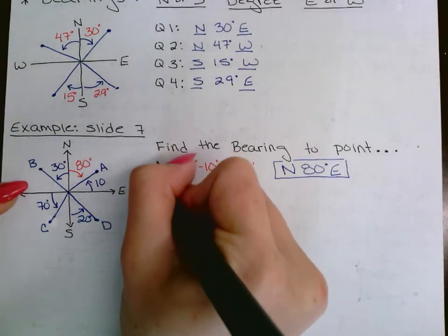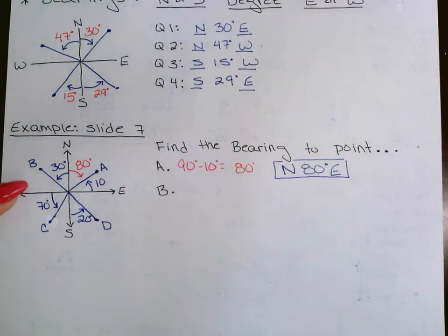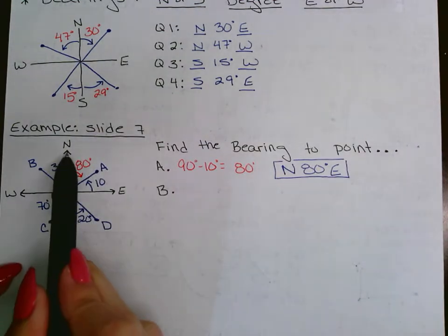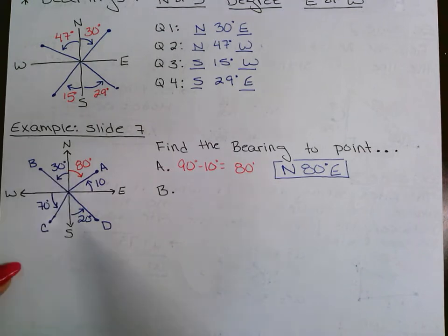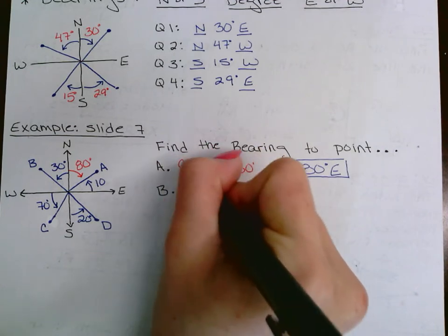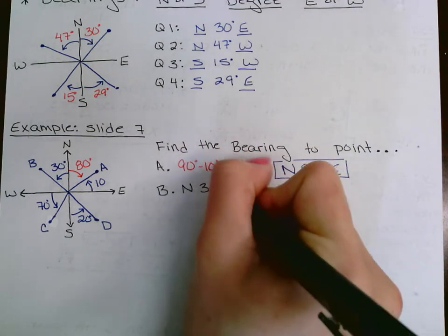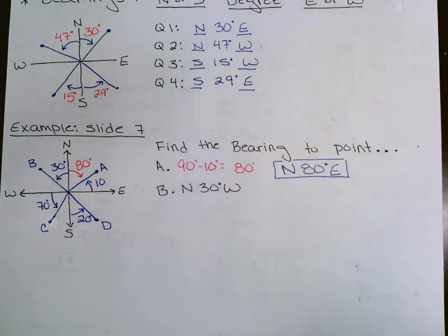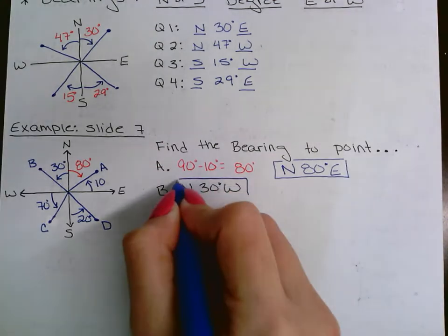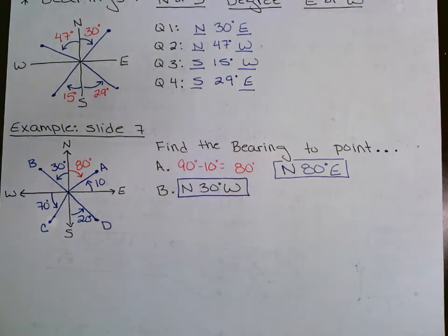Point B is in quadrant 2. In quadrant 2 we go north then west — and they gave us the angle from the y-axis directly, so no subtraction needed. The answer is N 30° W.